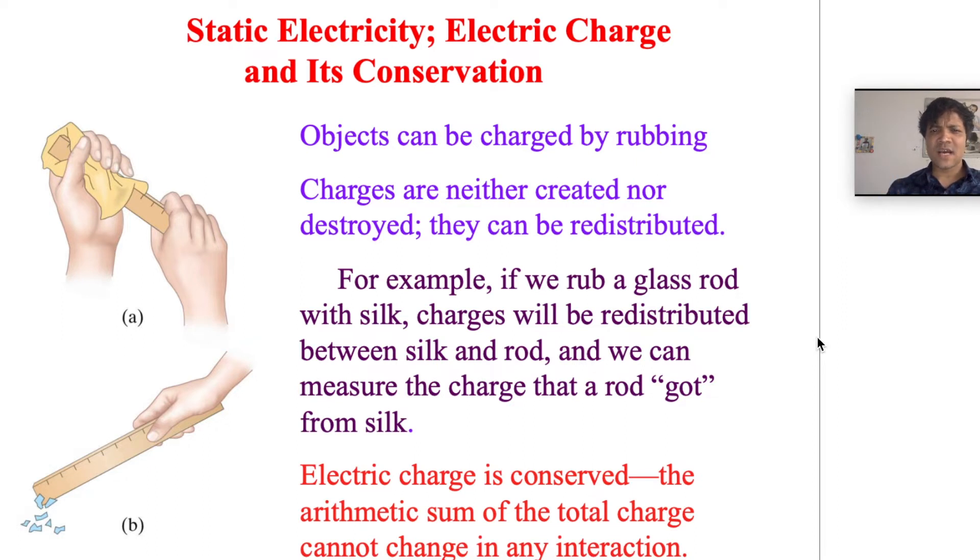Charges are neither created nor destroyed; they can be redistributed. This is conservation of charge, like conservation of energy. For example, if you rub a glass rod with silk, charges will be redistributed between silk and rod, and we can measure the charge that a rod got from silk. Electric charge is conserved - the arithmetic sum of total charge cannot change in any interaction.